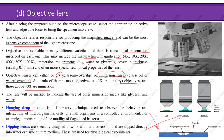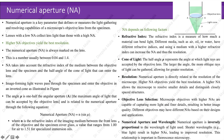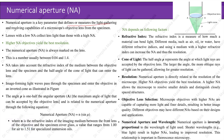Numerical aperture is a key parameter that defines the light-gathering and resolving capabilities of a microscope's objective lens. Lenses with low numerical aperture collect less light than those with high numerical aperture; higher numerical aperture objectives yield the best resolution. The numerical aperture is always marked on the lens and is usually a number between 0.04 and 1.4. It takes into account the refractive index of the medium between the objective lens and the specimen, and the half-angle of the cone of light that can enter the lens.